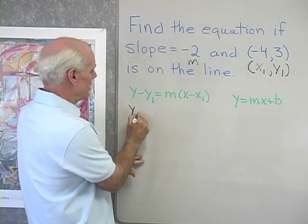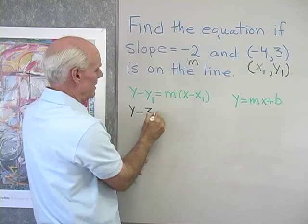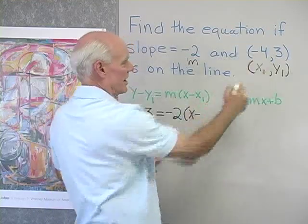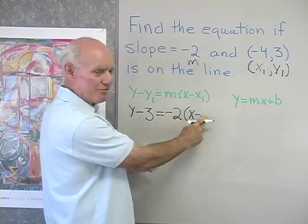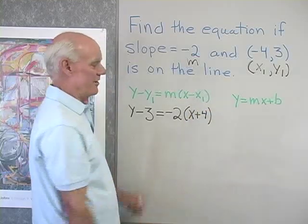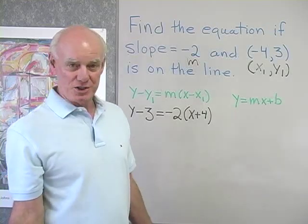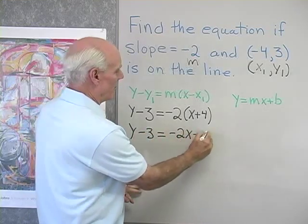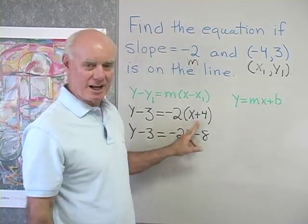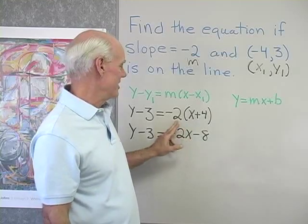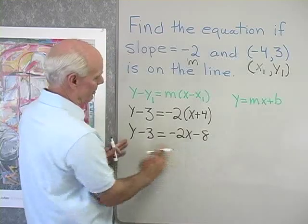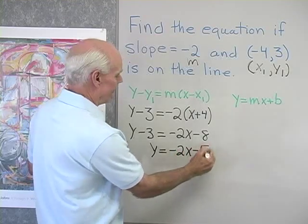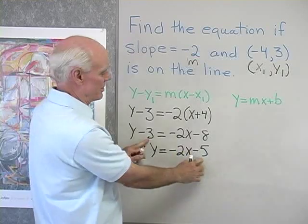So let's do that. y minus y₁, which is three, is equal to m, which is negative two, times (x minus x₁), which is negative four. x minus negative four is the same as x plus four. That's the equation of that line. Now I'll simplify: y minus three equals negative two x minus eight — remember to multiply negative two times both x and four. Then adding three to both sides, I get y equals negative two x minus five.